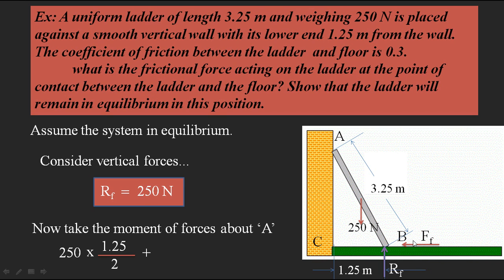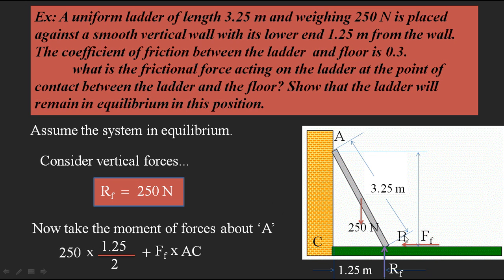The frictional force Ff also causes clockwise rotation. Its moment arm is the perpendicular distance AC — the vertical height of the ladder along the wall. AC is not directly given, so we need to calculate it. The moment equation becomes: 250 × (1.25/2) + Ff × AC = Rf × 1.25, where Rf × 1.25 is the anti-clockwise moment due to Rf.